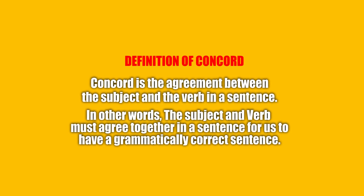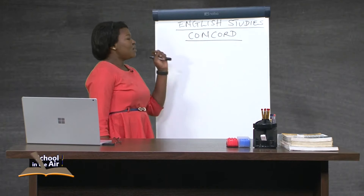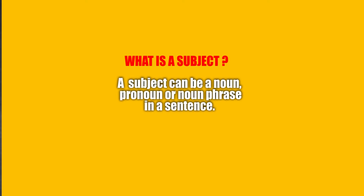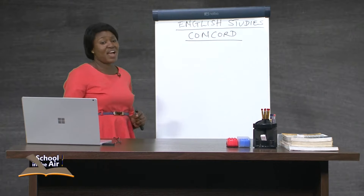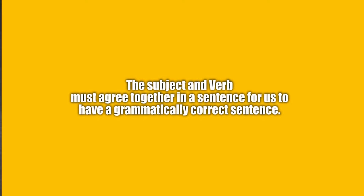Concord is the agreement between subject and verb in a sentence. The subject and the verb must agree together in a sentence for us to have a grammatically correct sentence. A subject can be a noun, a pronoun, or a noun phrase in a sentence. And we are all familiar with a verb, which is an action word.